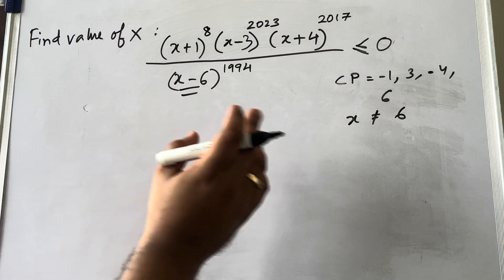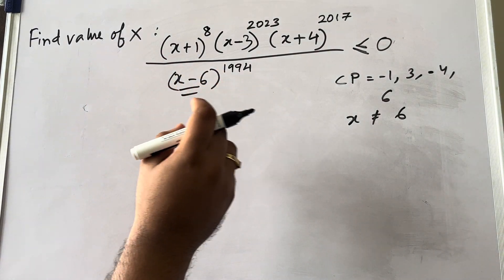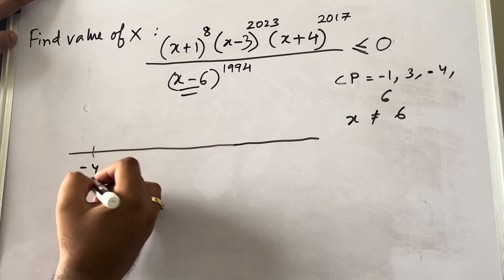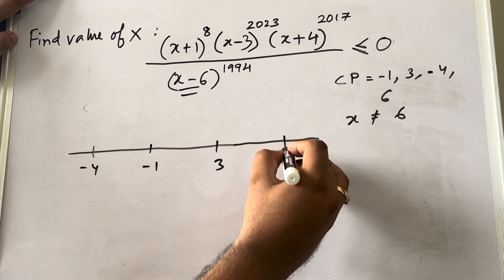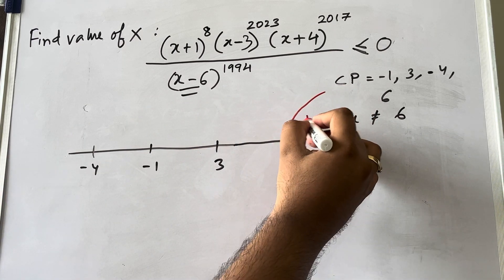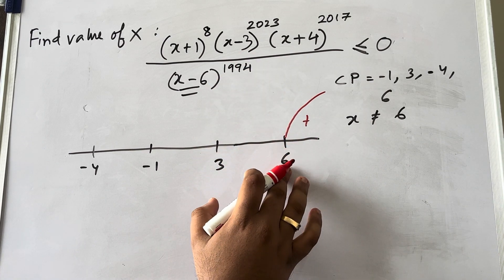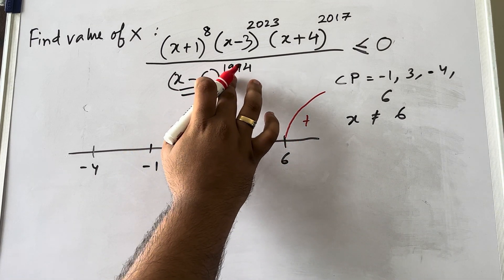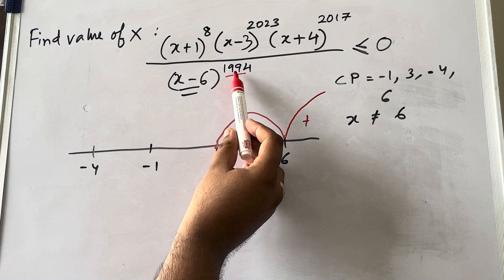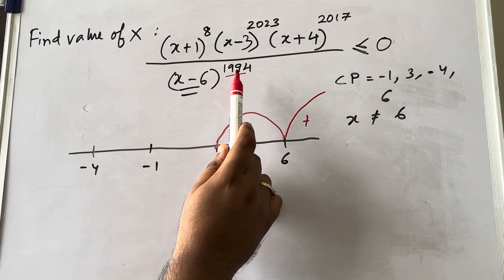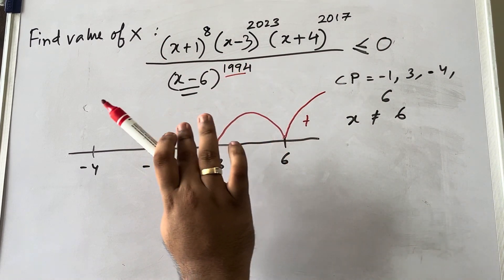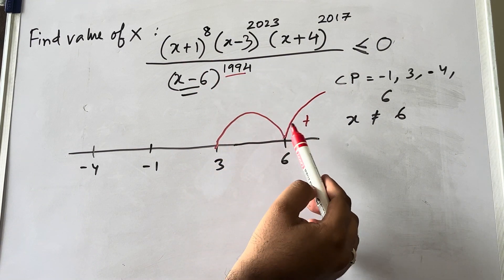Let us now plot this on the number line. I mark the points: minus four, minus one, three, and six. As taught in the previous class, you always start from the rightmost point. The right side is the positive part and the left is negative. Now, the logic only depends on whether the power of each factor is odd or even — don't worry even if the numbers are very large like five-digit numbers; the solution remains simple.